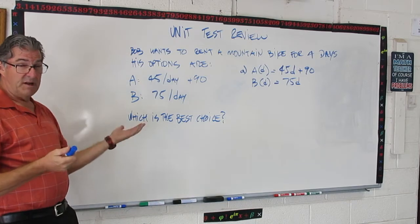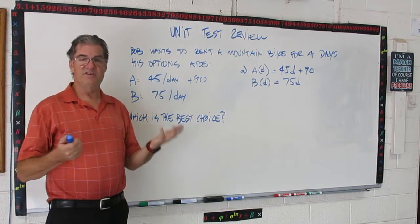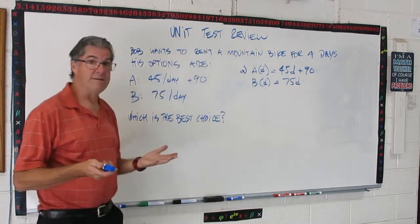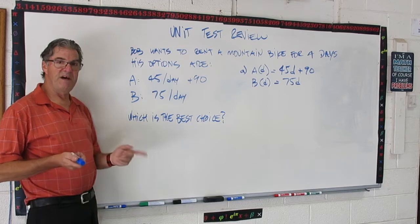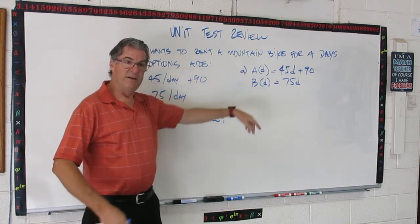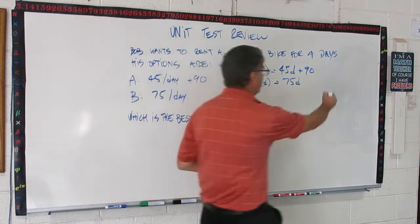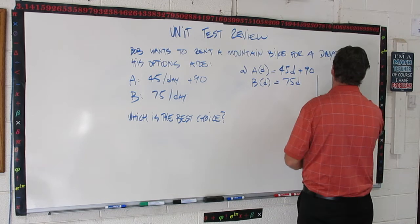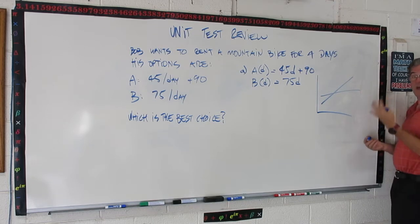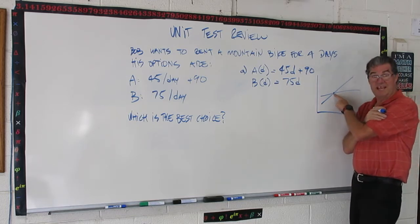So, first off, like on a problem like this, you're probably going to get asked, write functions for each of these two options. So, we've got that. Now, you might get asked, how much is he going to pay if he rents for two days? So, you just plug two into each of these and you'd find out that rate. We're going to cut straight to this question. Which is the best choice? Now, you have two options. One, you can get out your calculator, you can graph these two functions, and then you can use the calculator to find the point of intersection. So, you're going to have two functions here that will look something like this. One of them is going to rise more steeply. The other one is going to rise less steeply, depending on which function you're looking at. This point of intersection is where both functions yield the same rate.